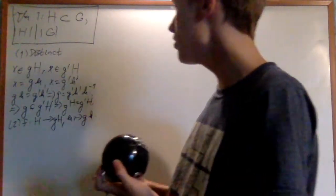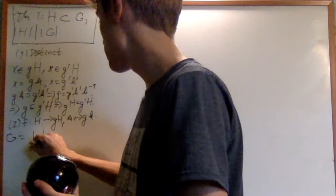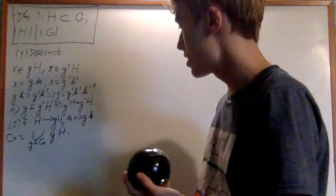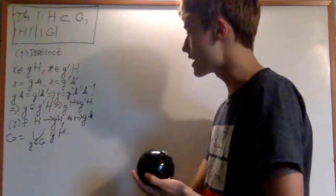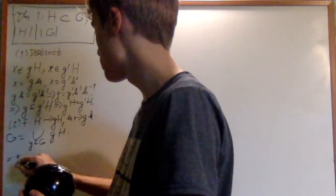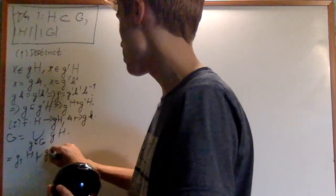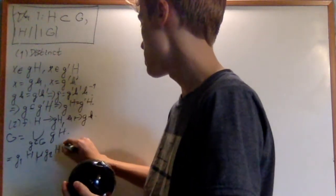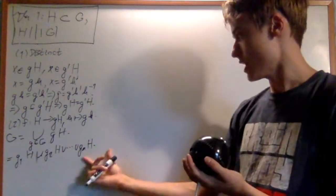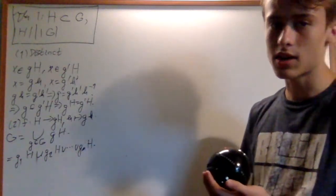The proof goes as follows. G, the entire group, has to be equal to the union over g in G of the cosets. That's very easy to see. But remember, each of these cosets are distinct. So from each of these cosets I'm going to pick a representative: from the first coset I pick g₁H, from the second coset g₂H, all the way up to gₙH. These are all distinct cosets, and I'm just picking a single representative from each.